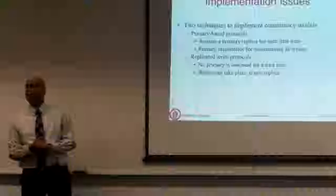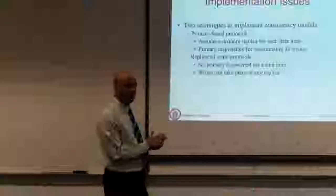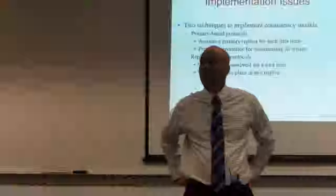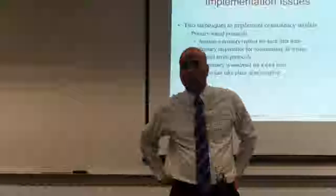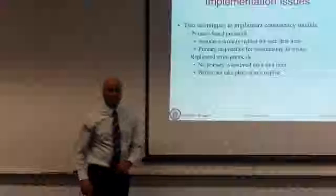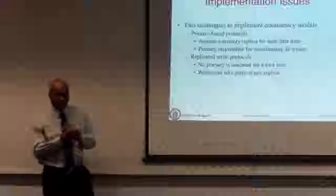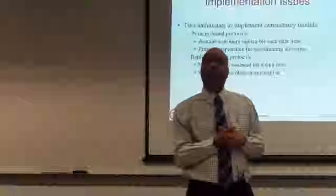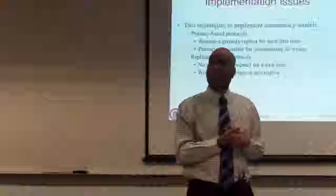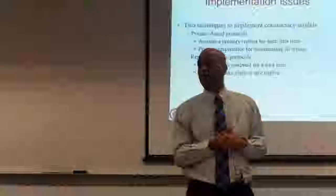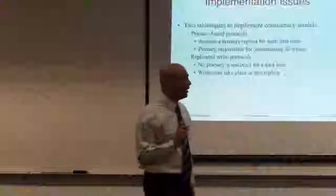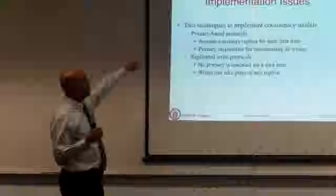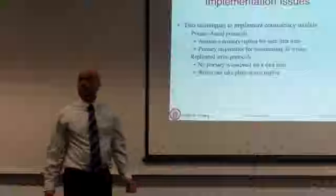We will continue the discussion from last time. We were talking about consistency models. Today we are going to switch gears and talk more about implementation. This is just a tiny peek into the implementation because when we get to the World Wide Web next week, starting next Wednesday, we are going to get into a lot more detail about caching and consistency. For now, we are going to look at two different models: the primary-based model and the replicated write model.